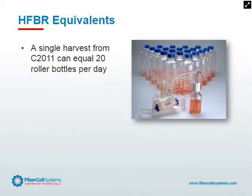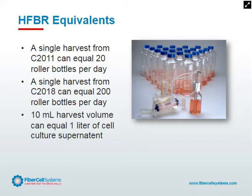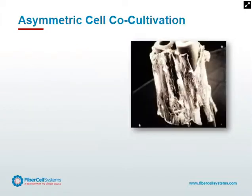A single harvest from a C2011 cartridge can equal 20 roller bottles per day. A single harvest from our larger cartridge can equal 200 roller bottles per day — about 100 times higher concentration than what we see versus flask or spinner culture. Hollow fiber bioreactors are the method of choice for the expression of difficult-to-express proteins from mammalian expression systems.